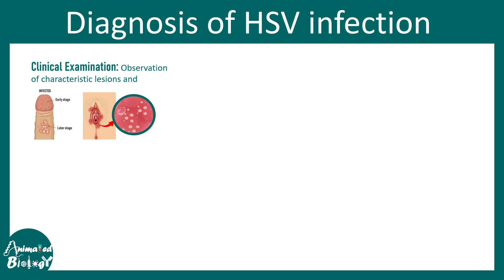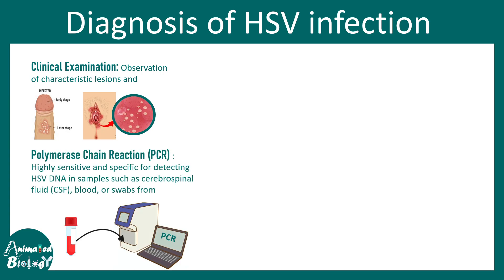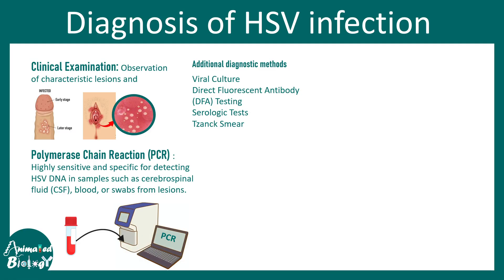Diagnosis is done primarily by clinical observation — the blisters or rashes are characteristic of herpes. Polymerase chain reaction-based diagnosis is more accurate, detecting specific viral genes unique to HSV from cerebrospinal fluid, blood, or swabs from lesions. Additional diagnostic methods include viral culture, direct fluorescence antibody detection, and serological tests, though these are not used very frequently.